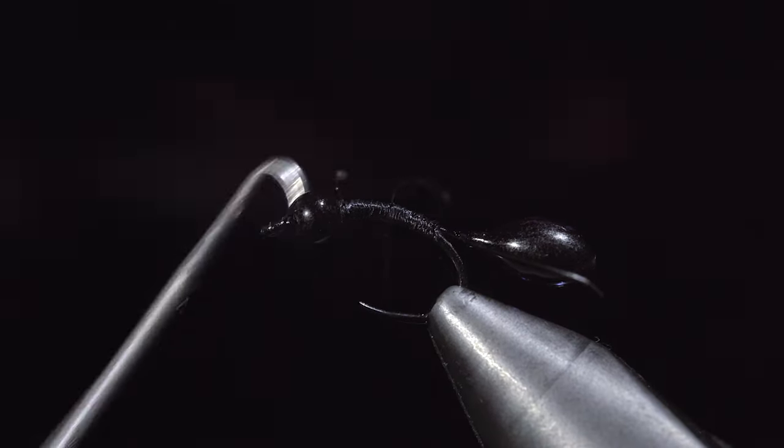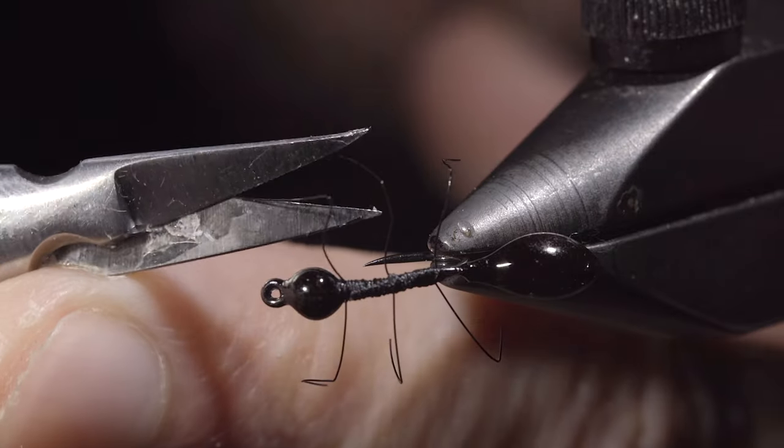With the legs fixed in place, we will whip finish and snip our thread free. Grab a pair of tweezers and bend these legs to give them a more realistic look.